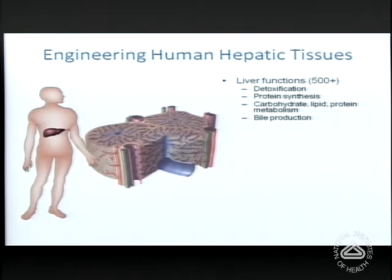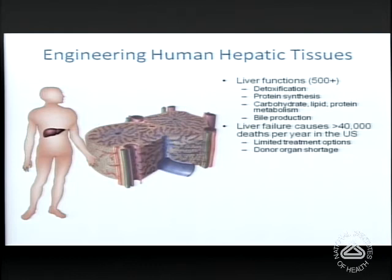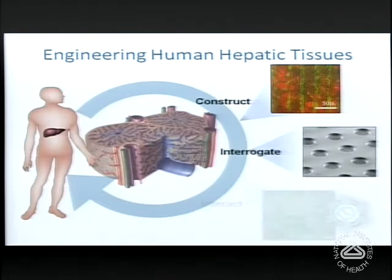I'm going to start with my example about the liver. The liver, when working well, has many functions — 500-plus functions, which we typically bin into four main categories. Liver disease causes about 40,000 or more deaths in the U.S. every year. There are limited treatment options; basically, the gold standard is whole organ transplantation, and of course there's a shortage of donor organs. We and others have been interested in ultimately engineering implantable liver tissue to help these patients.